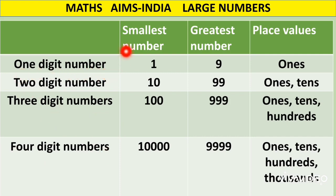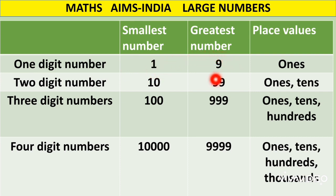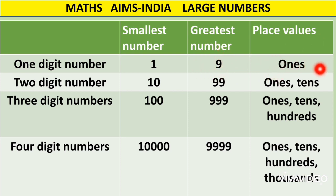Coming to one digit numbers, what is the smallest one digit number? The smallest one digit number is one, because all the one digit numbers start from one and they end at nine. So nine becomes the greatest one digit number. And what about the place values? We have only one place value which is ones place.